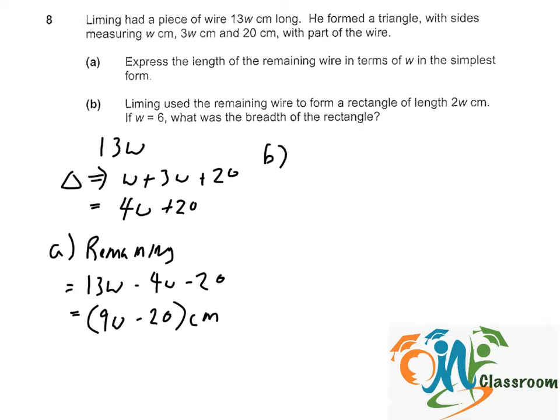Okay, so the length of the rectangle is 2W. So the length of the rectangle has to be 2 times 6 equals to 12 cm. And the remaining,